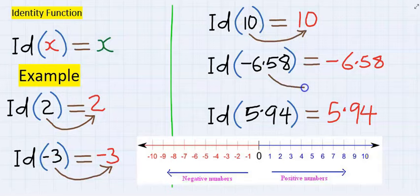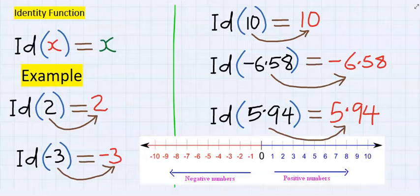The id of -6.58 will return -6.58, the id of 5.94 will return 5.94. In the examination you won't see it like this.